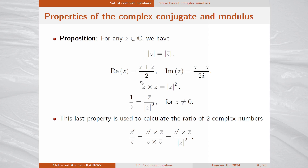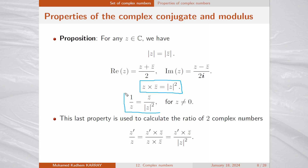The third property says that z multiplied by z-bar equals the modulus of z squared. In particular, 1 over z equals z-bar divided by |z| squared, for any z different from zero. This is very useful when calculating the ratio of two complex numbers: to compute z prime divided by z, multiply numerator and denominator by the complex conjugate of the denominator.